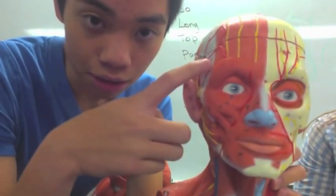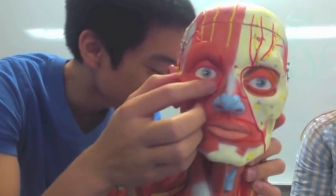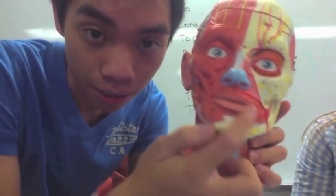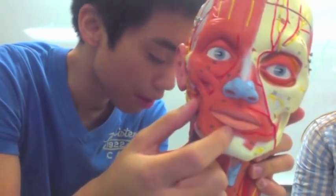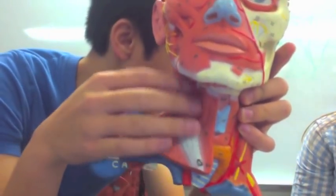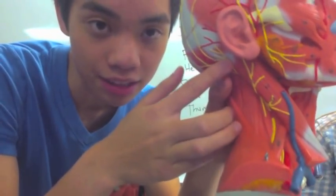The muscle that goes around the eye is the orbicularis oculi — oculi means eye. The muscle around the mouth is called the orbicularis oris. Then we have the muscle right here that goes down, called the sternocleidomastoid. It comes from your sternum and goes all the way to your mastoid process on your skull.